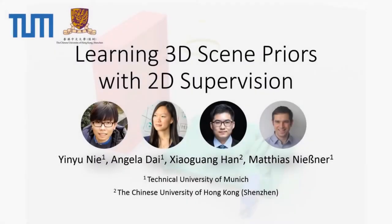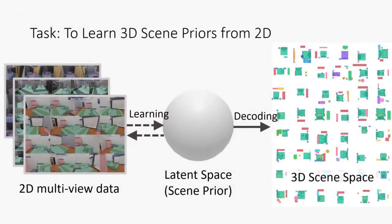We present a new approach to learn 3D scene priors with 2D supervision. Without requiring any 3D data, our method learns both semantic and geometric scene priors from multi-view RGB images. We represent a 3D scene as a latent vector from which we can decode to a sequence of objects characterized by their class categories, 3D bounding boxes, and meshes.